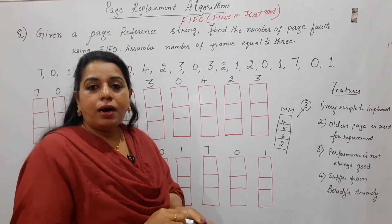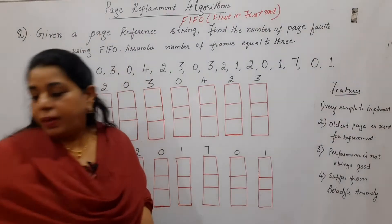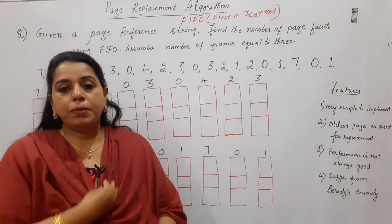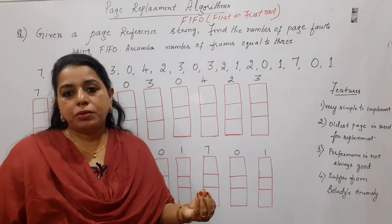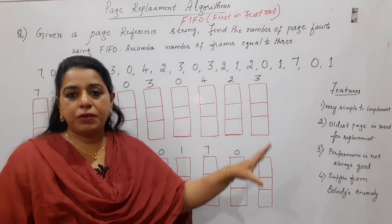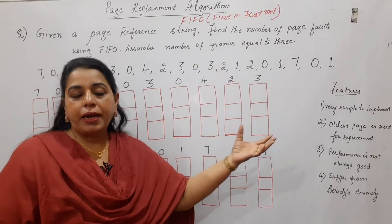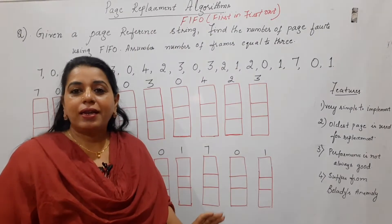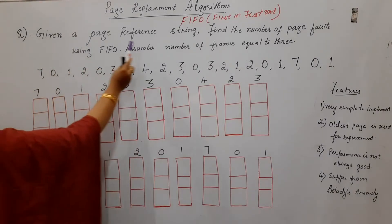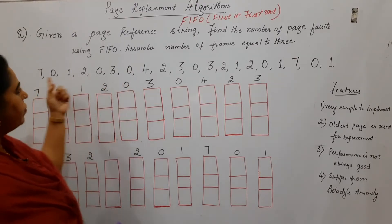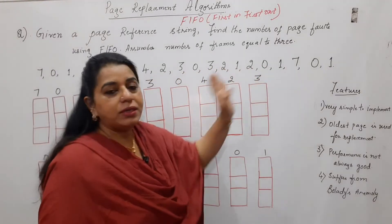I will be teaching you here with an example, showing what kind of problem statement will be there — it is typically asked for seven to eight marks. Let us see the problem statement and solve it. I will also tell you a few features about this algorithm. Here, given a page reference string: 7, 0, 1, 2, 0, 3, 0, 4, 2, 3, 0, 3, 2, 1, 2, 0, 1, 7, 0, 1. These are normally page numbers given in some sequence, and in page replacement algorithm concepts, we call it a reference string.